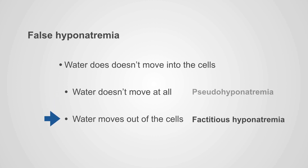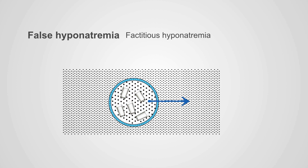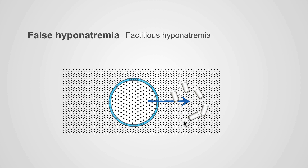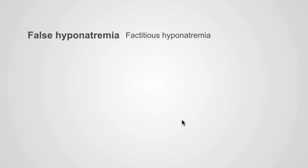Factitious hyponatremia is the other form. Here, instead of water moving into the cells like we'd expect with hyponatremia, water is actually moving out of the cells. In a patient with an extracellular hypertonic environment — a much higher concentration than the intracellular — water is drawn osmotically out of the cells. This water then dilutes the serum sodium, causing the low sodium reading. The low sodium is real, not a measurement error, but it doesn't have the same implications as true hyponatremia because water is moving out of the cells rather than in.